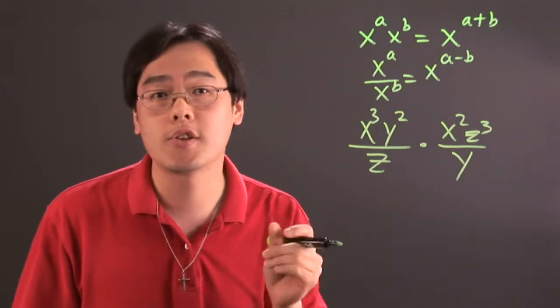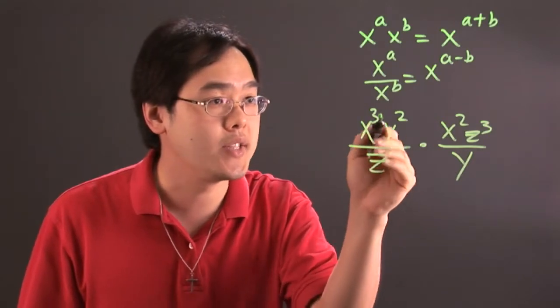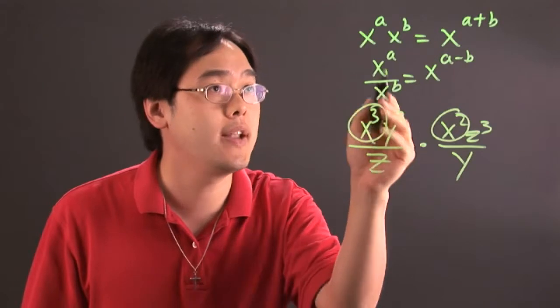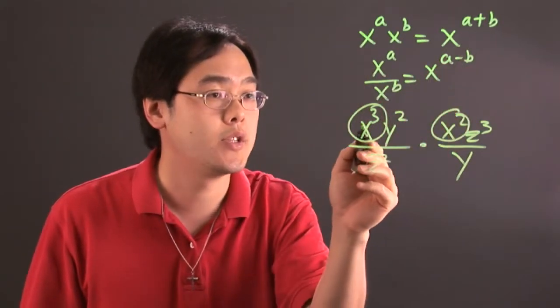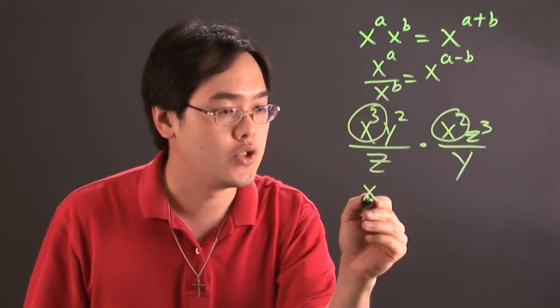Again, you can only look at the terms with the same bases. So let's talk about the x's. The x's just happen to be both in the numerator. So you can multiply the two, but again, you can add the exponents. So x cubed times x squared, you add the three and the two, so you have x to the fifth power.